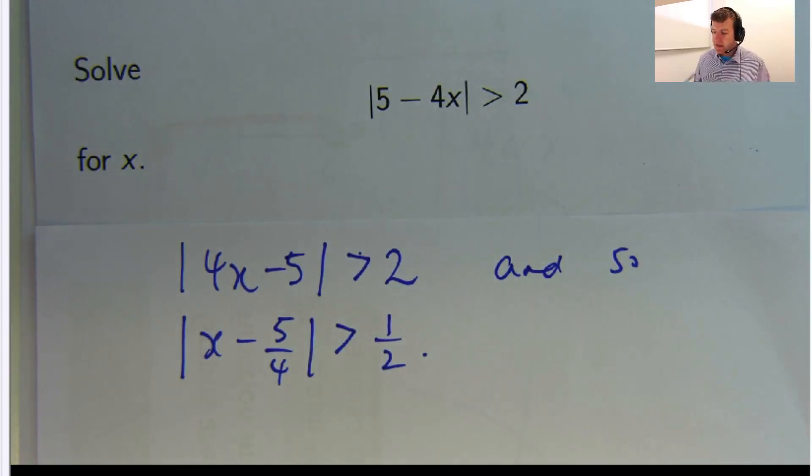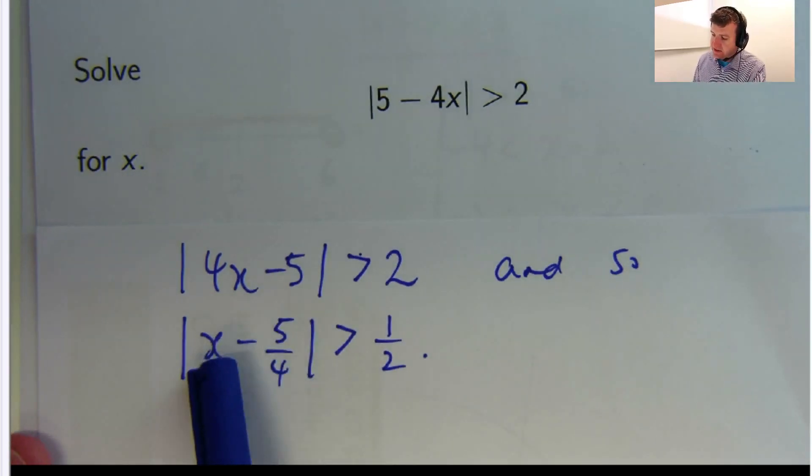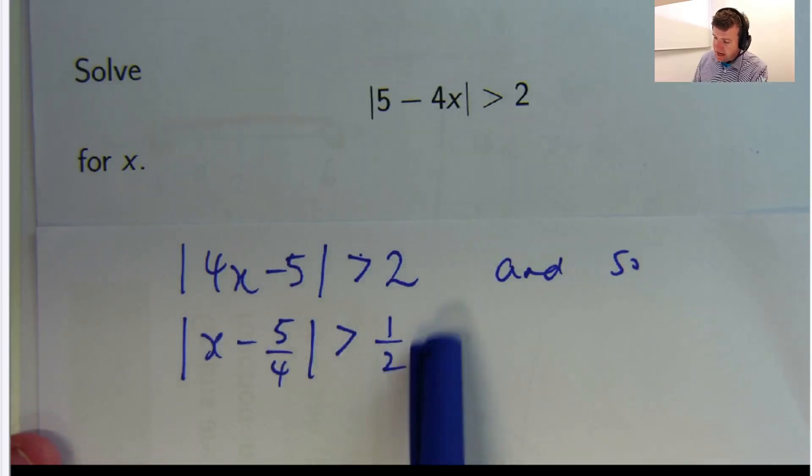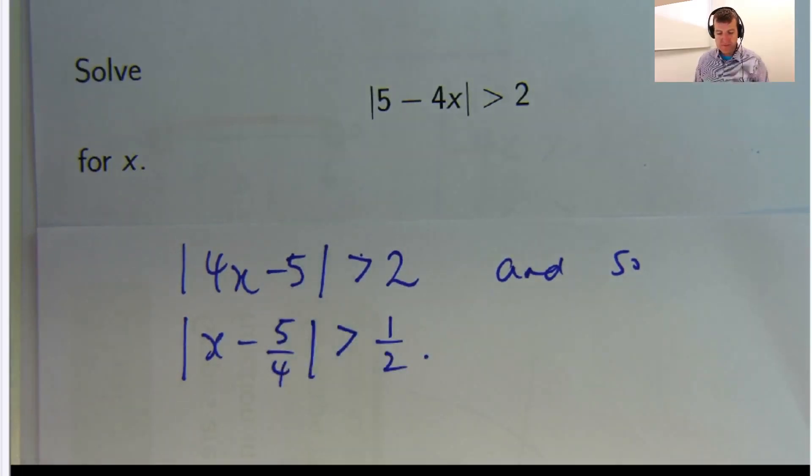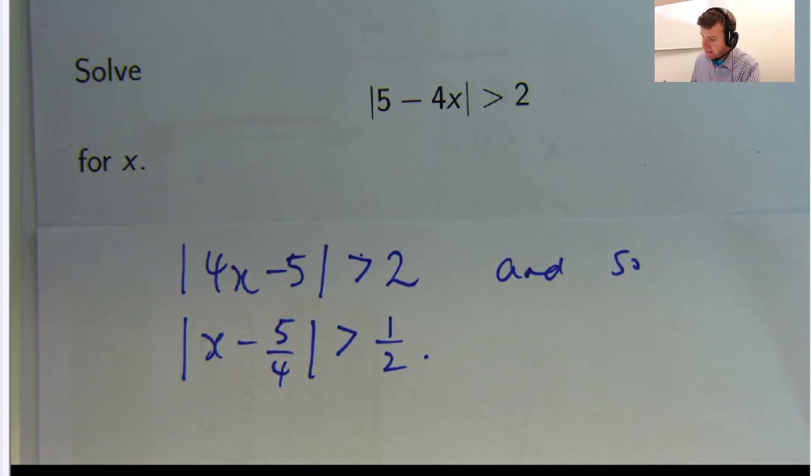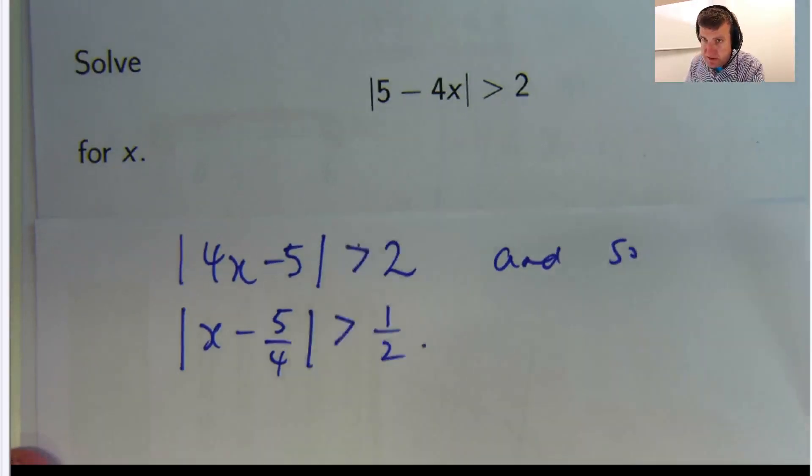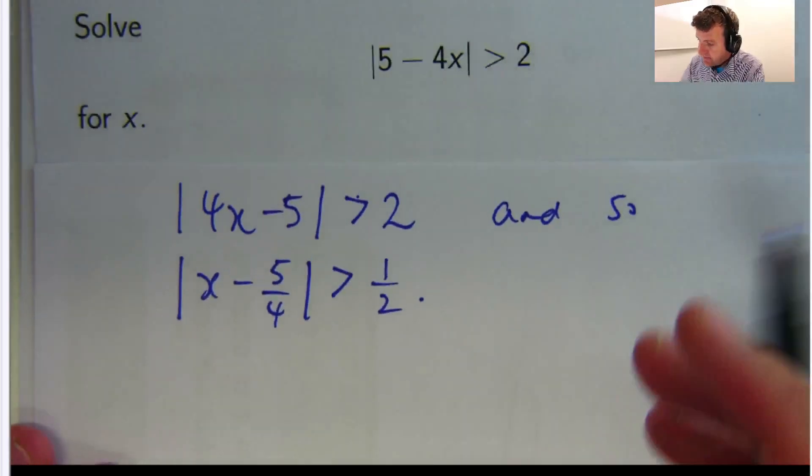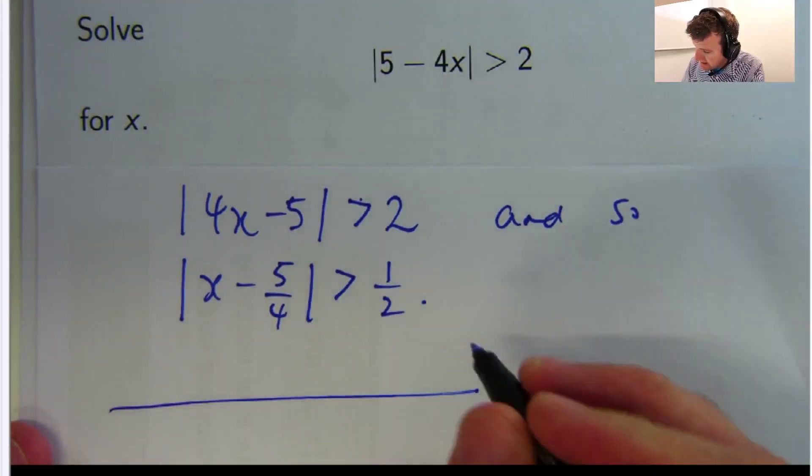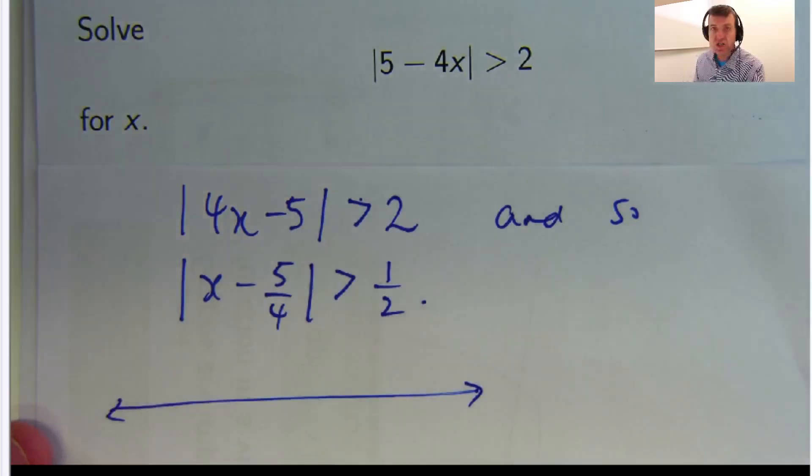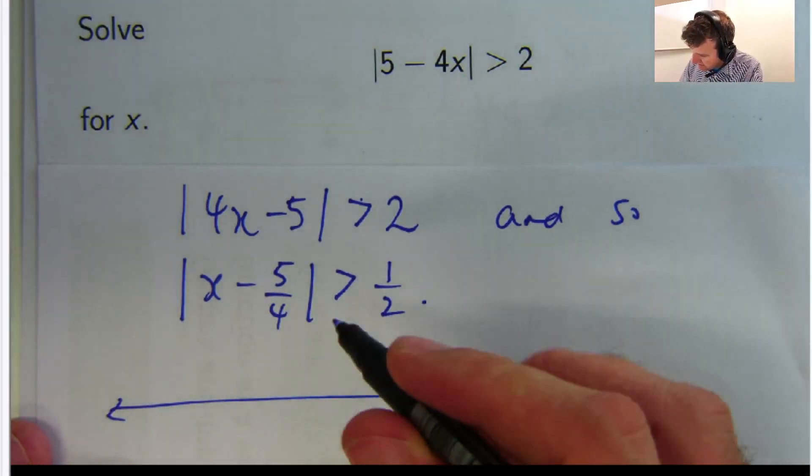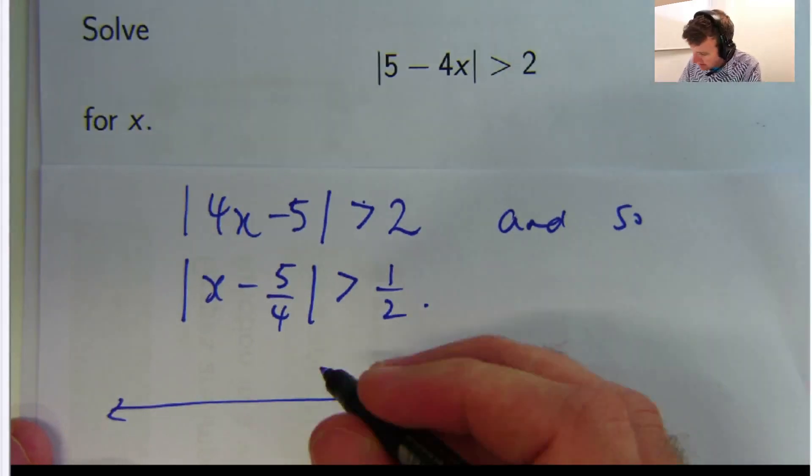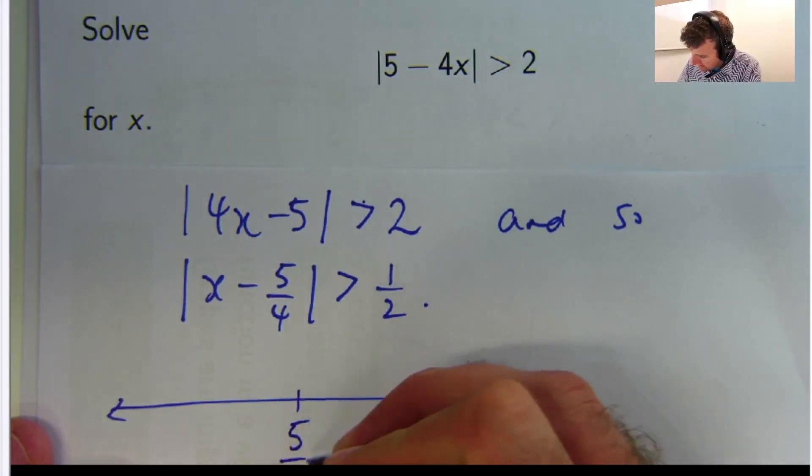Okay, we're looking for those x values that are greater than half a unit away from 5 on 4. Okay, so I can actually draw this on the number line, draw the solution on the number line now and see how we go. So this is the geometric or the visual way of doing something. Alright, so let's draw in